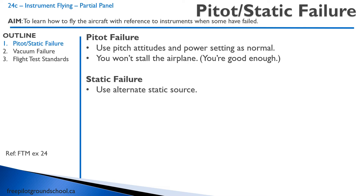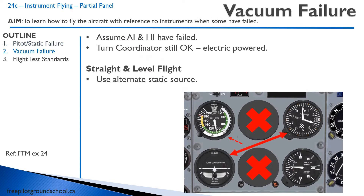Just fly it the way you remember how to fly it and most likely everything's going to work out. You can also have a static failure where you lose your altimeter, VSI, and your airspeed is incorrect. If that happens, you can use your alternate static source. The more worrying problem is a vacuum failure — your vacuum pump has failed and you've lost your attitude indicator and heading indicator.